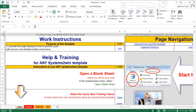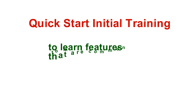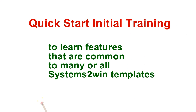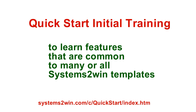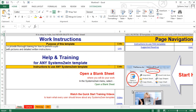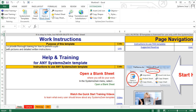Your template opens to the Help worksheet. If you already completed your Quick Start Initial Training, then you already know this, along with many other features that are common to all 150 plus of your Systems2win templates. And you know that the next thing to do is to go back to your Systems2win tab and click the button to open a blank sheet.